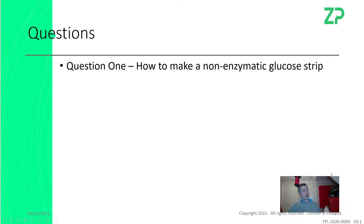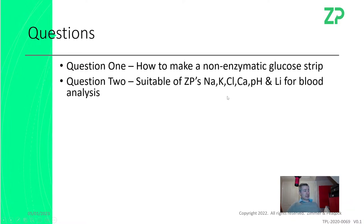We do put a lot of effort into answering questions. The first question today is how to make a non-enzymatic glucose strip — a follow-up from last week. Also: are ZP sensors suitable for sodium, potassium, chloride, calcium, pH, and lithium for blood analysis?